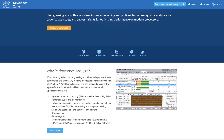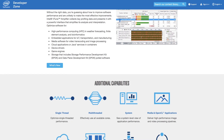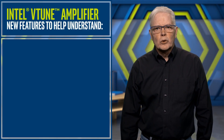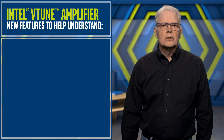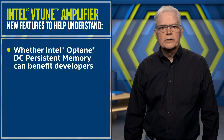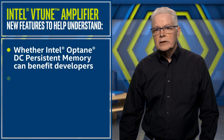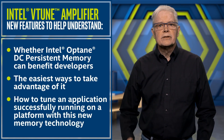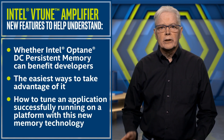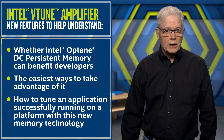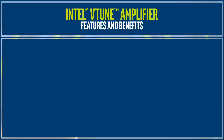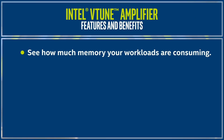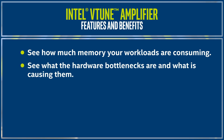Intel VTune Amplifier is a widely used performance analysis and optimization tool. We've added features and workflows to help developers understand whether Intel Optane DC Persistent Memory can benefit them, the easiest ways to take advantage of it, and how to tune an application once it's successfully running on a platform with this new memory technology. VTune Amplifier helps you see how much memory your workloads are consuming, what the hardware bottlenecks are, and what is causing them.